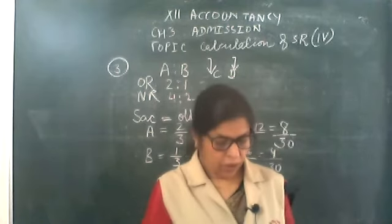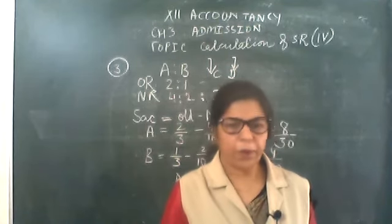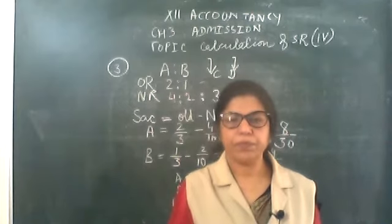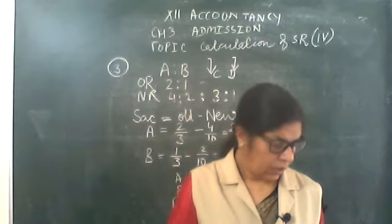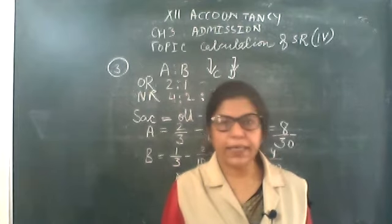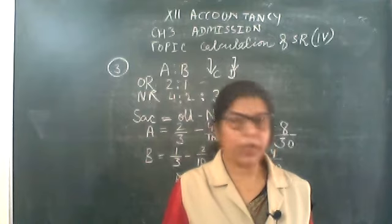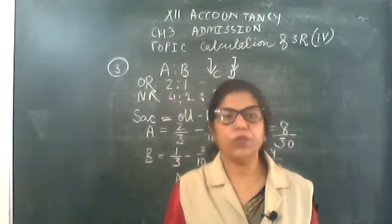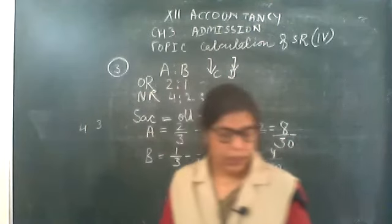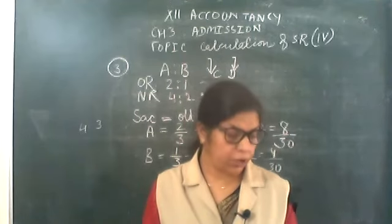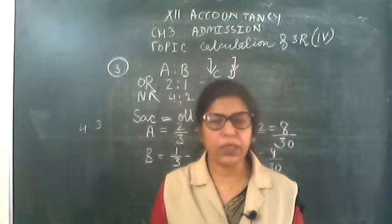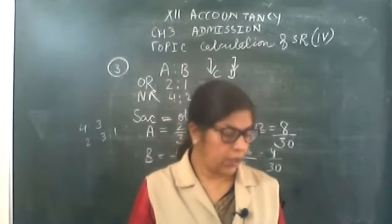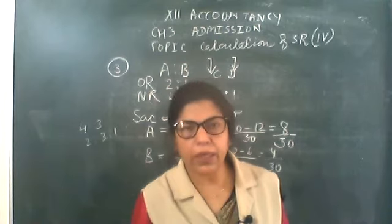Note down for homework: that is NC and D's ratio — NCRT illustration 8, page number 121. I will give you the question: Ramesh and Suresh are partners for 4:3, old ratio 4:3. They admitted Mohan and the new ratio will become 2:3:1. This is illustration 8, page number 121 of NCRT.